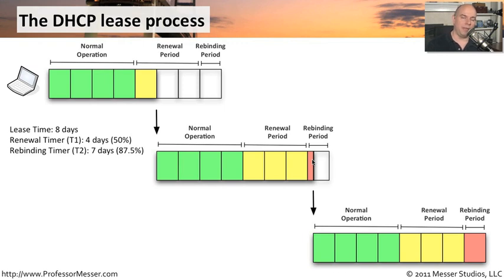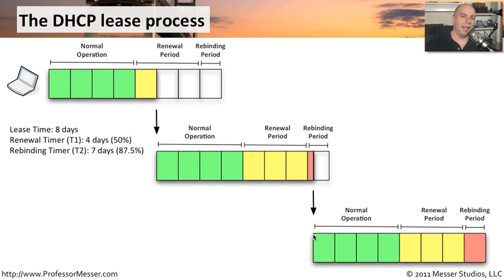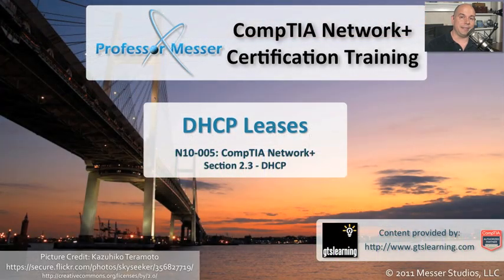Because we happen to have redundant DHCP servers, it responds back immediately and says, sure, here's a new IP address for you. And before you get through that eighth day, you've suddenly got a new IP address and your timers are all reset. By having this lease process in place with these timers, we can be assured that we're always going to have an IP address in a timely manner, with no downtime, and we've automatically built redundancy into our DHCP process.